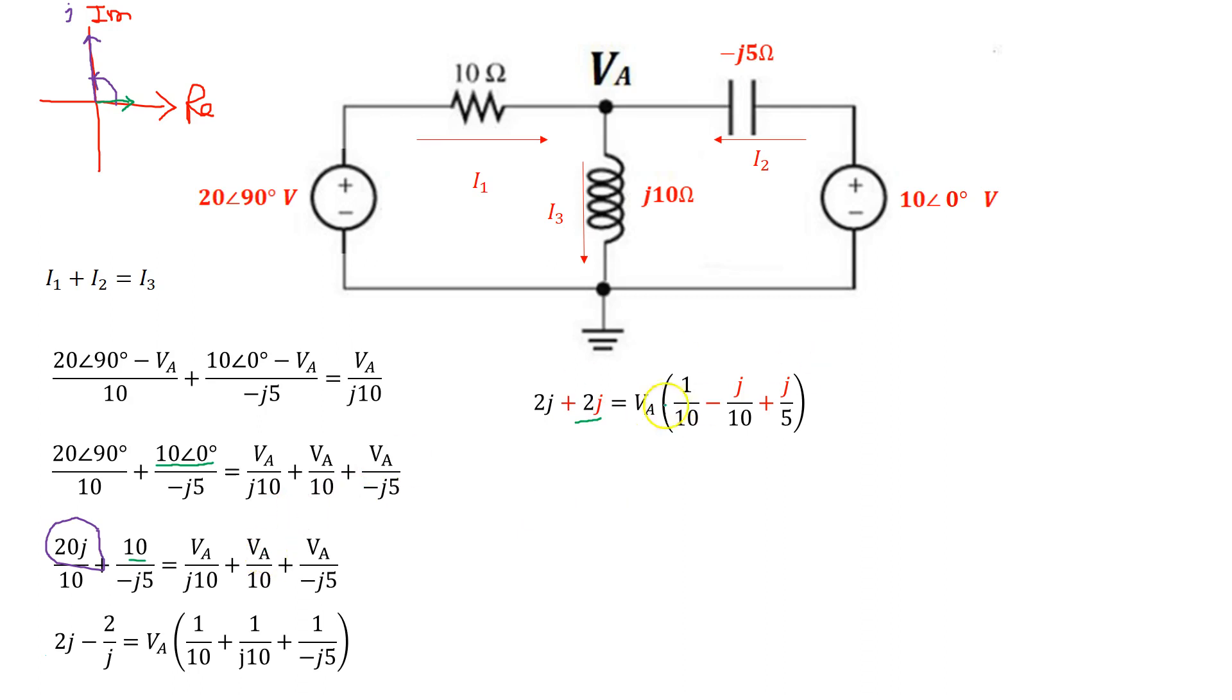So that is a 2j. Minus 2 over j becomes 2j. Similarly, 1 over j becomes minus j. And 1 over minus j becomes plus j right here. So that is because 1 over j is equal to minus j.